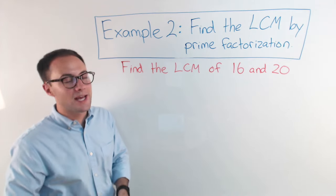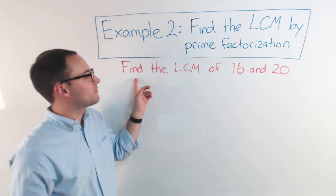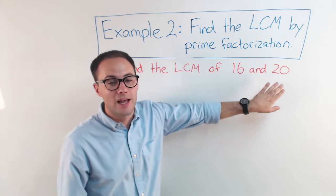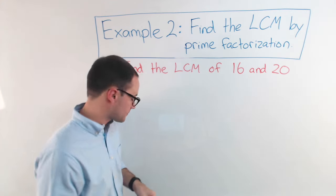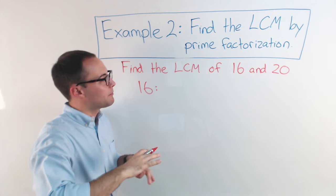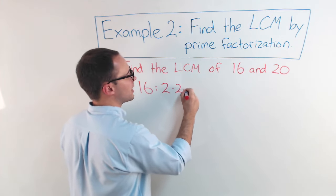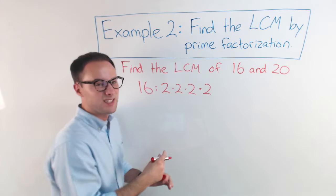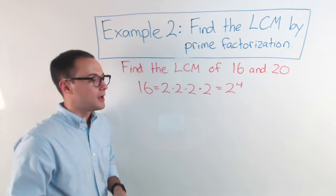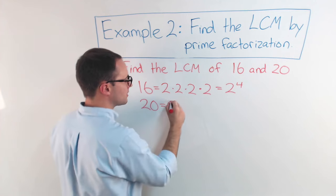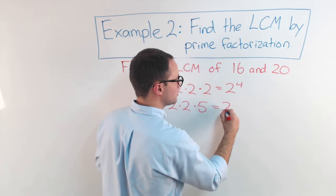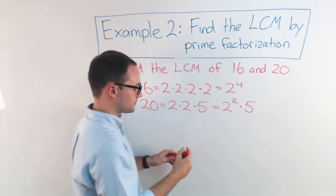For example two, we're going to find the LCM by prime factorization. Find the LCM of sixteen and twenty. The first step is to find the prime factorization of each number. The prime factorization of sixteen is two times two times two times two, which simplifies to two to the fourth power. For twenty, the prime factorization is two times two times five, which simplifies to two squared times five.